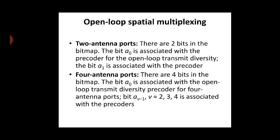For the 2-port antenna, the identity matrix is 2×2. Similarly, for the 4-port antenna there are 4 bits in the bitmap. Bit A0 is associated with the open loop transmit diversity pre-coder for 4 antenna ports. Bits A(V-1) for V equal to 2, 3, 4 are associated with the pre-coders corresponding to V layers and codebook indices 12, 13, 14, and 15. These pre-coders are applied cyclically to the V vectors on the PDSCH.